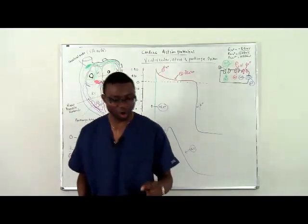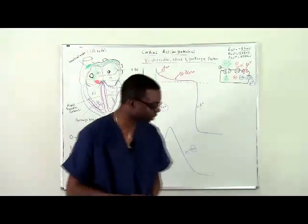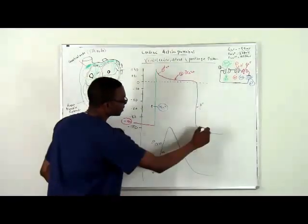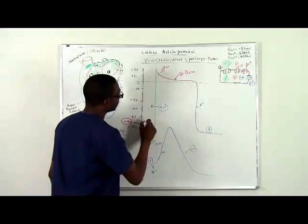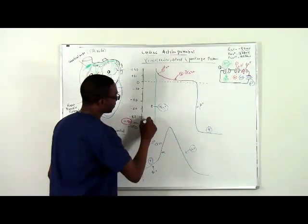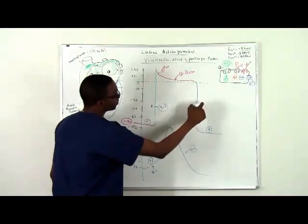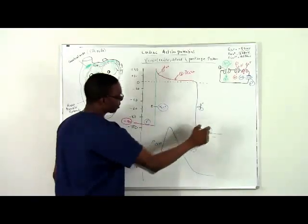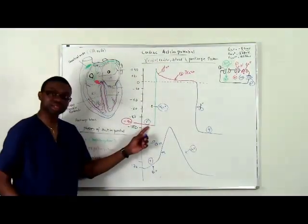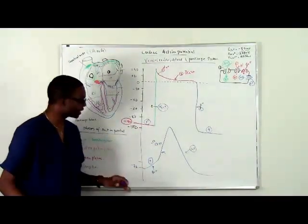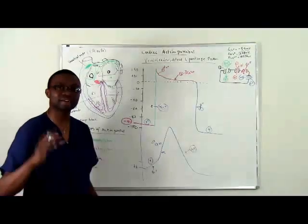Remember, this is phase four. Again, phase four, zero, one, two, and three, then four. The intrinsic rate of depolarization in the SA node is the fastest. The intrinsic rate of depolarization in the heart is the fastest in the SA node.